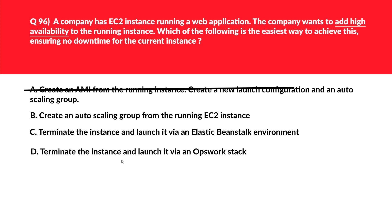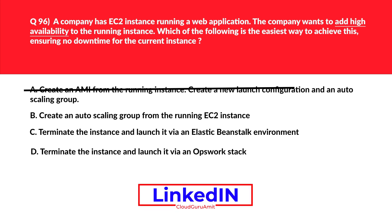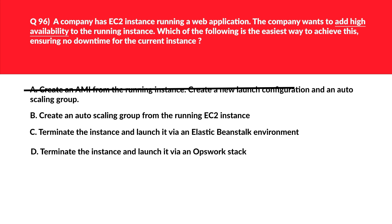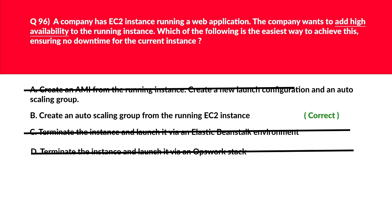Let's look at options C and D together — they look almost the same. Option C says terminate the instance and launch it via an Elastic Beanstalk environment, while D says terminate the instance and launch it via an OpsWorks stack. Both Elastic Beanstalk and OpsWorks are very time-consuming and will incur some downtime, which is against the objective of the question. Hence, incorrect choice — we'll reject both and lock B: create an auto scaling group from the running EC2 instance as the correct answer.